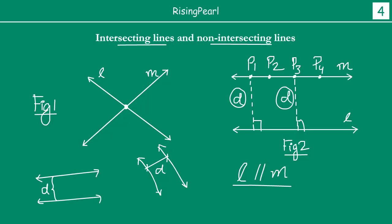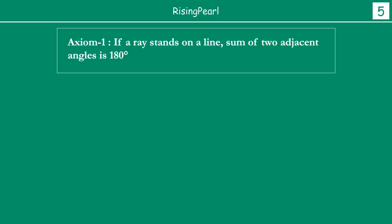Now we are going to move on to our next point. We are going to talk about the first axiom in this series. The first axiom we want to discuss is: if a ray stands on a line, the sum of the two adjacent angles is 180 degrees. Axioms are basically universal truth assumptions which are always true — we don't try to prove the axiom; we use axioms to prove other things.